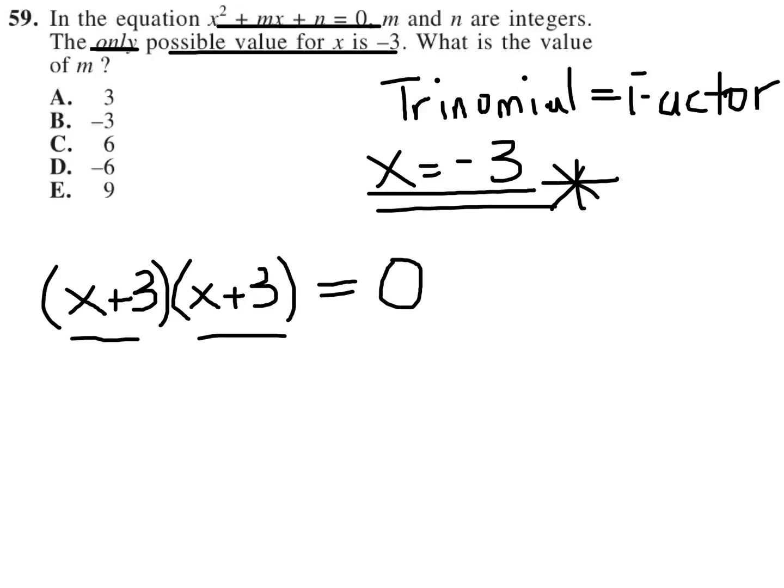Well, what is x plus 3 times x plus 3? When we FOIL that, we get x squared plus 6x plus 9 equals 0.